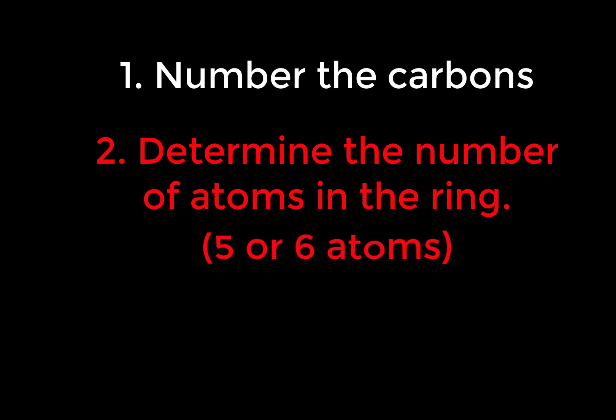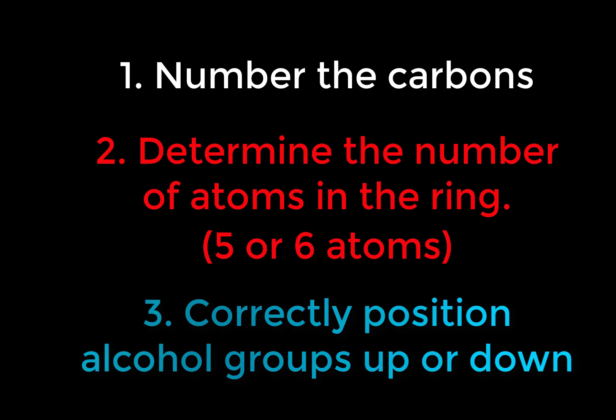Your two choices for the size of the ring are going to be five or six atoms. When you have five atoms, you're going to have a pentagon like we saw with ribose. With six atoms, you're going to have a hexagon like we're going to see with glucose. The final step is to add in all of the alcohol groups, making sure that they're oriented properly.